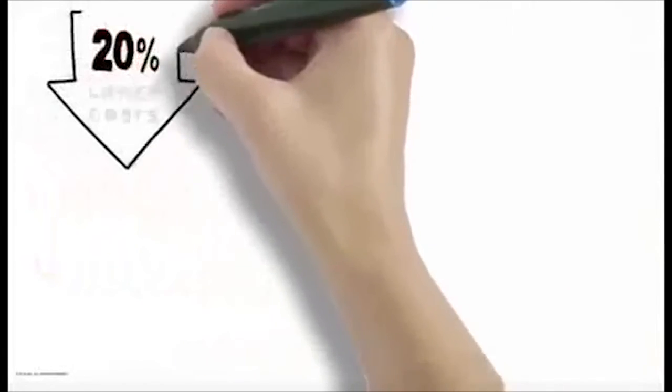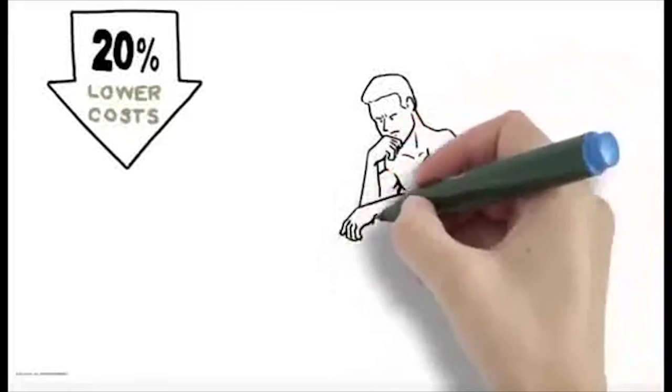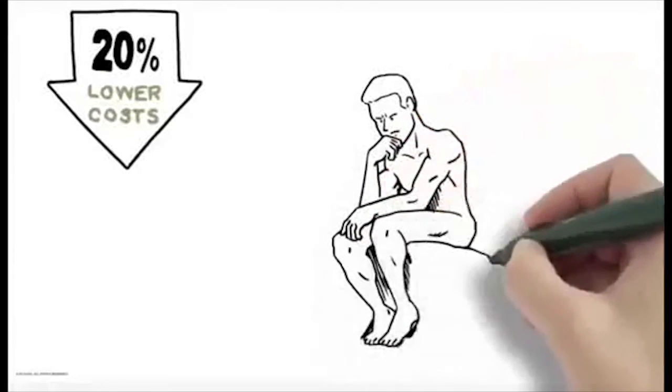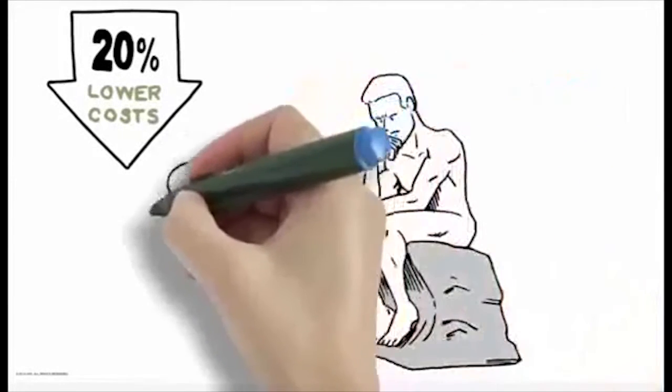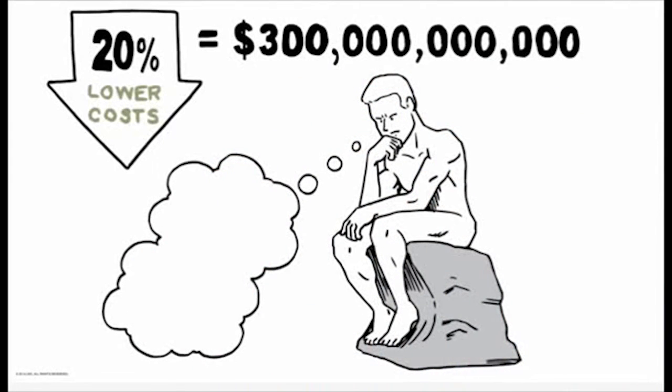A 20% reduction in the cost of full-onset chronic illness and complex episodes of care, definitely an attainable goal based on hard data, would save the U.S. health system $300 billion per year.